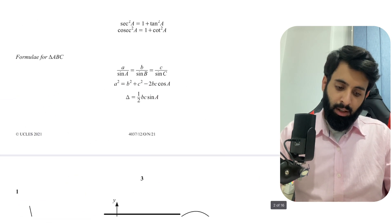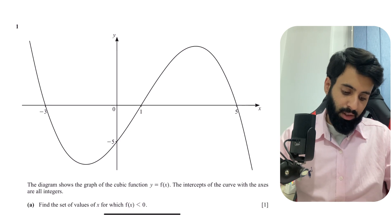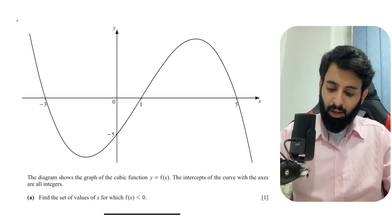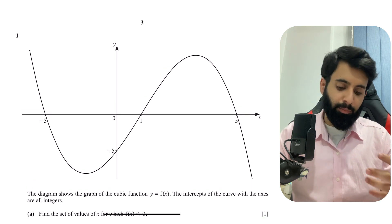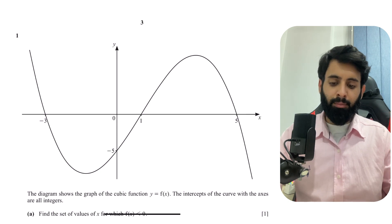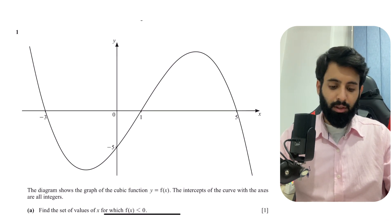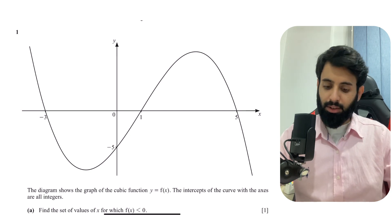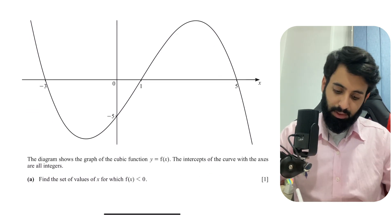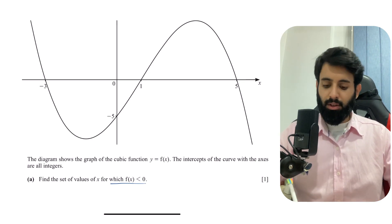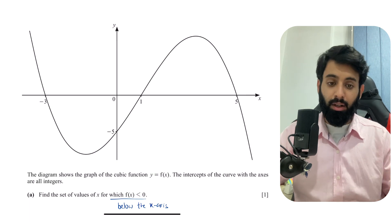Question number 1 says: the diagram shows the graph of the cubic function y = f(x). The intercepts of the curve with the axes are all integers. Find the set of values of x for which f(x) < 0. This topic is cubic functions and cubic inequalities. It's not different from quadratic inequalities — once you have a sketch of the curve, when f(x) is less than zero, you're talking about the part of the curve that is below the x-axis.